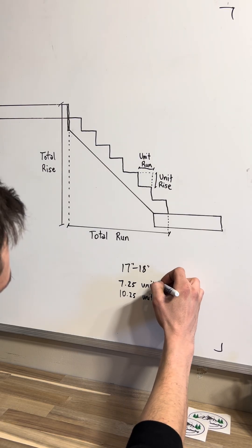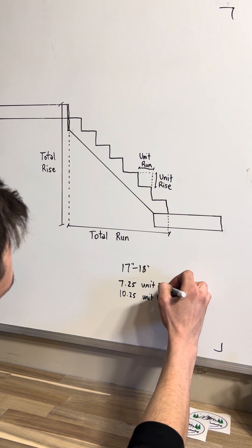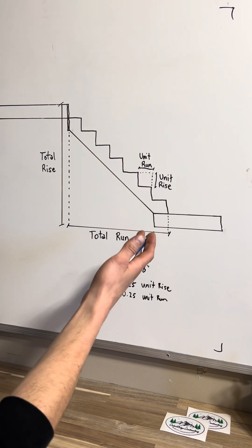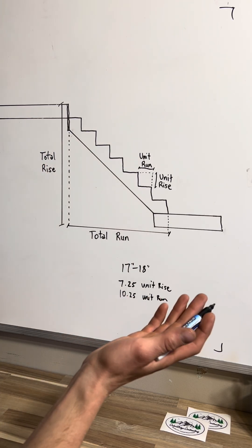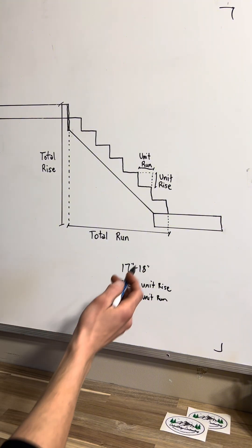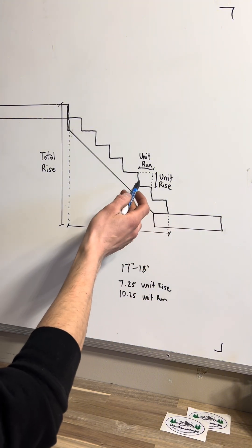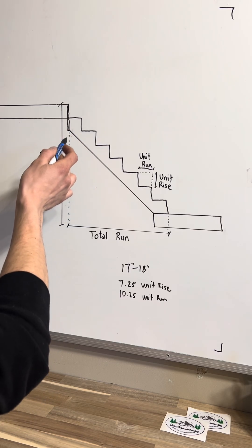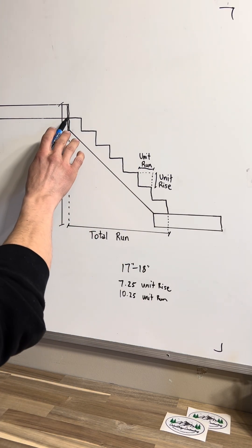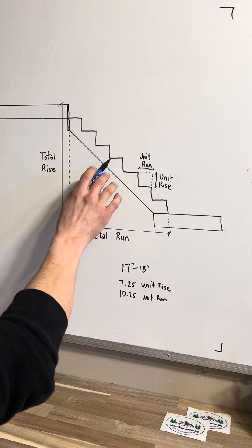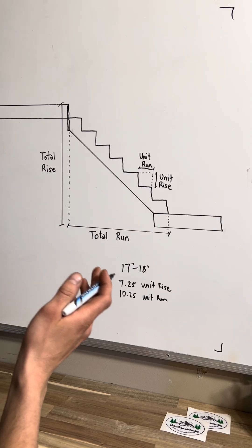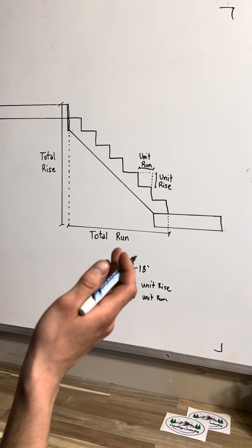Now all we have to do is calculate how many treads or unit runs are going to be in this stringer. If we count it out, we have 8 rises — one, two, three, four, five, six, seven, eight. Then we count the treads: one, two, three, four, five, six, seven. So it's very common that you'll have one less tread than your risers.